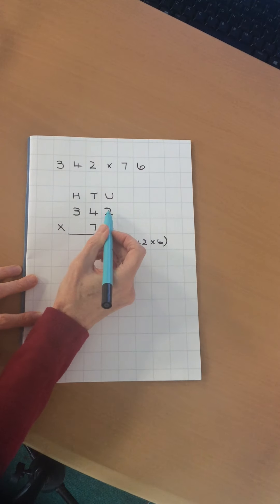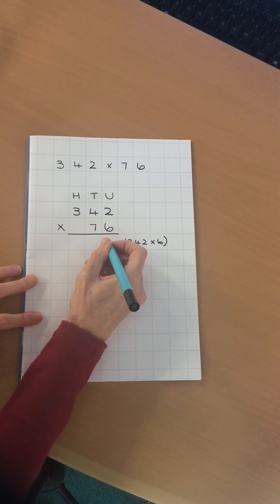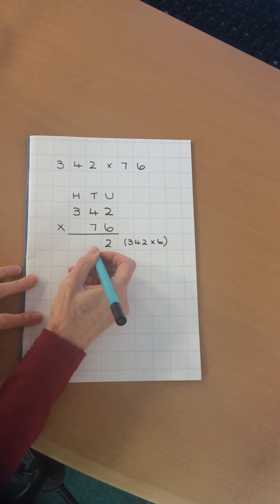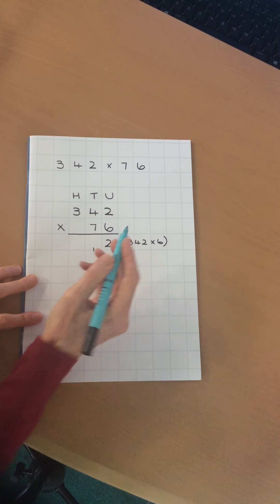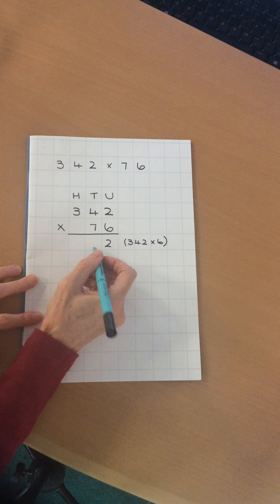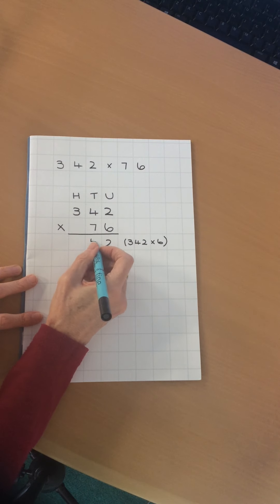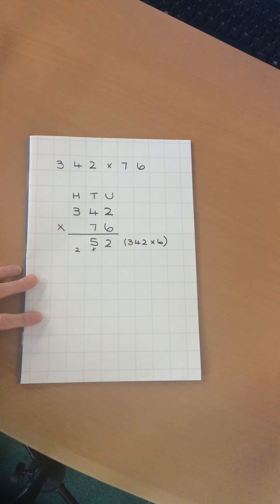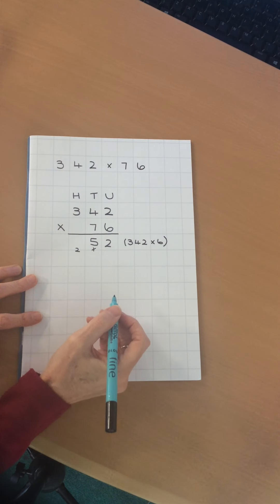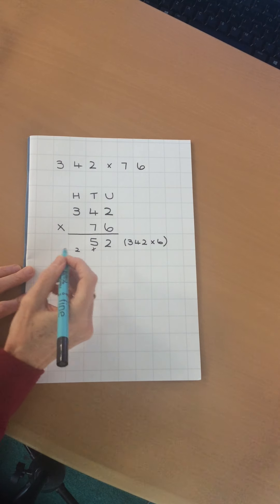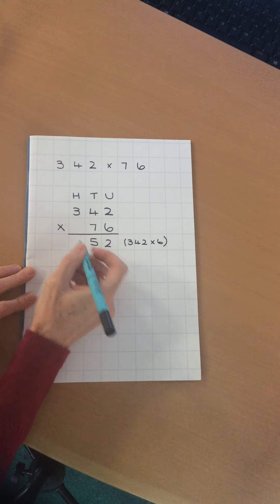We start with 2 times 6, which of course is 12. I'm going to carry my 1, and then I'm going to do 4 times 6, which is 24, and add on the 1, 25. There's my 5, carrying the 2. Cross out the 1 so that I don't get confused later. Finally, I'm going to be doing 3 multiplied by 6, which is 18, add on the 2. Cross that out, which gives me 20.